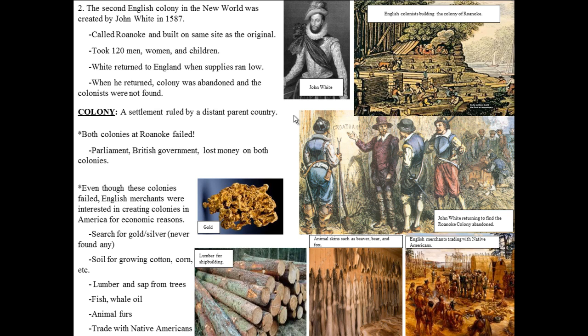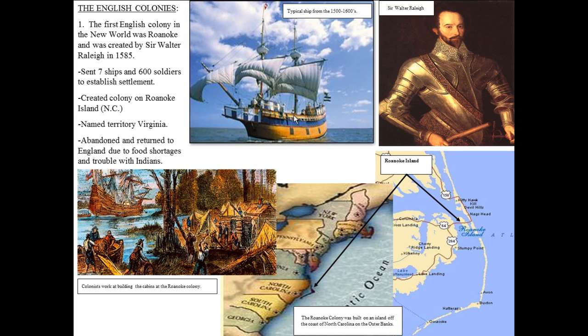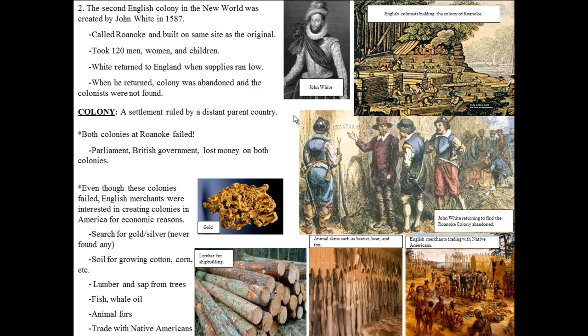The second English colony was created by John White in 1587, built on the same site as the original — two years later. He brought 120 men, women, and children and left them at Roanoke. He went back to England because supplies were low, and while he was there, England was at war with Spain, so he couldn't return for three years. When he finally came back, he found that the colony was abandoned and all the colonists were gone.